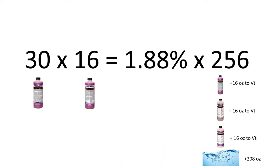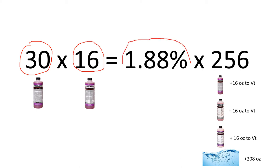As you can see, we have figured out where all of our fluid goes. We have our 30-index Intrafliant, 16 ounces of it. We have calculated for CT and arrived at a 1.88% solution strength. And we have recognized that our total volume includes 16 ounces of Intrafliant, 16 ounces of Proflo, 16 ounces of Restorative, and 208 ounces of water.